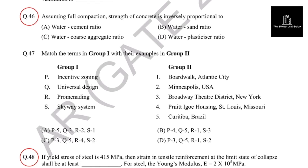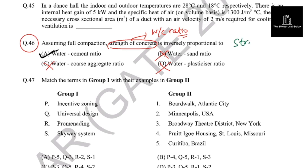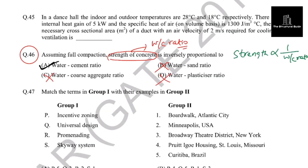The next question: assuming full compaction, the strength of concrete is inversely proportional to what? The strength of concrete is directly related to the water-cement ratio — not the water-sand ratio or the water-coarse aggregate ratio. The relation is: strength is inversely proportional to the water-cement ratio. Also remember, strength is directly proportional to the cement-to-sand ratio.